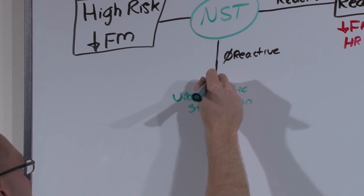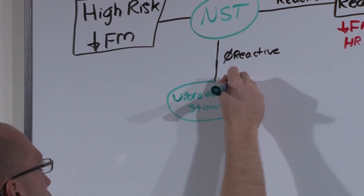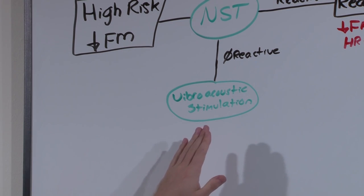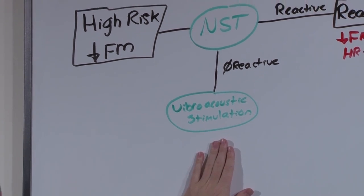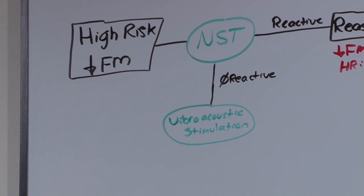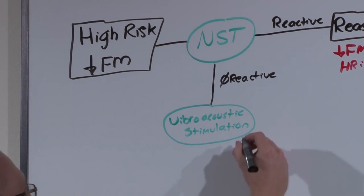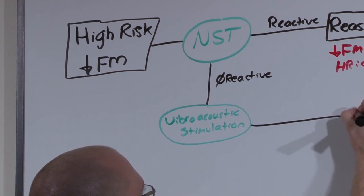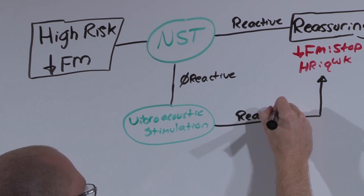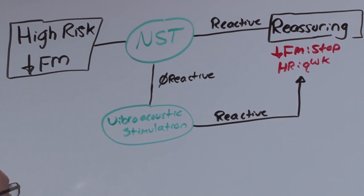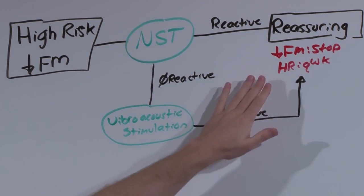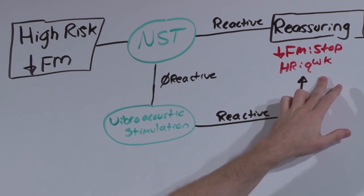Vibroacoustic stimulation is an ultrasound that sends in waves — basically a jackhammer next to baby — so baby is going to wake up. You then repeat the NST. If you get moderate variability and a normal heart rate, it's said to be reactive and that's reassuring. If decreased fetal movement, stop. For a high-risk pregnancy, repeat every week.